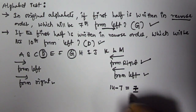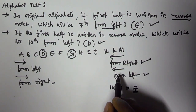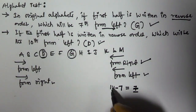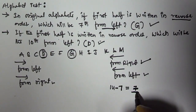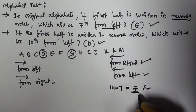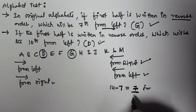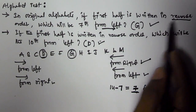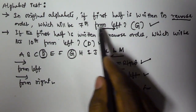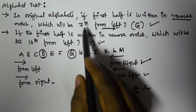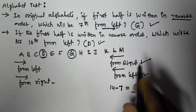So 14 minus 7 gives us 7, meaning we need the 7th letter from the left. Using the EJOTY rule: E is 5th, F is 6th, and G is 7th. So when reverse is applied, from left becomes from right, we find the 7th from right by subtracting from 14: 14 minus 7 is 7, so the 7th letter from the left is G.